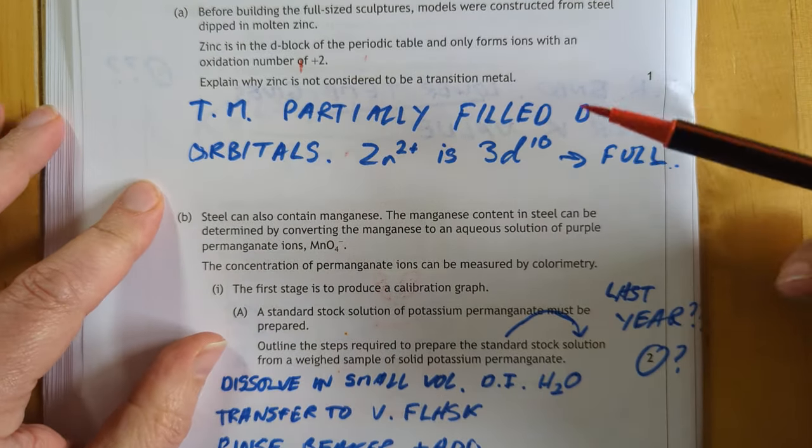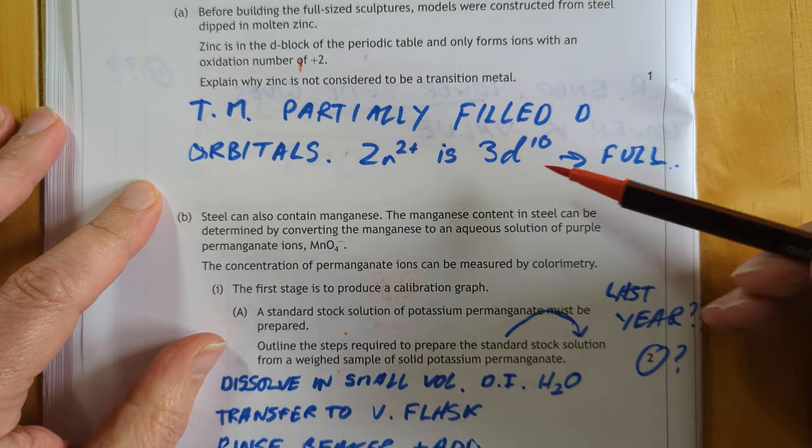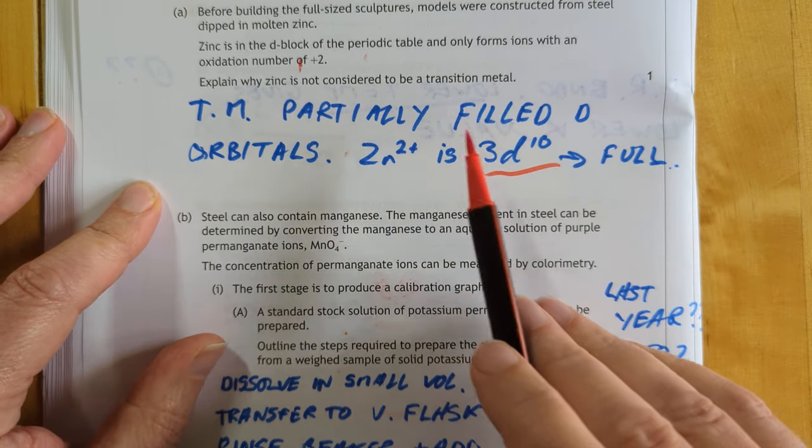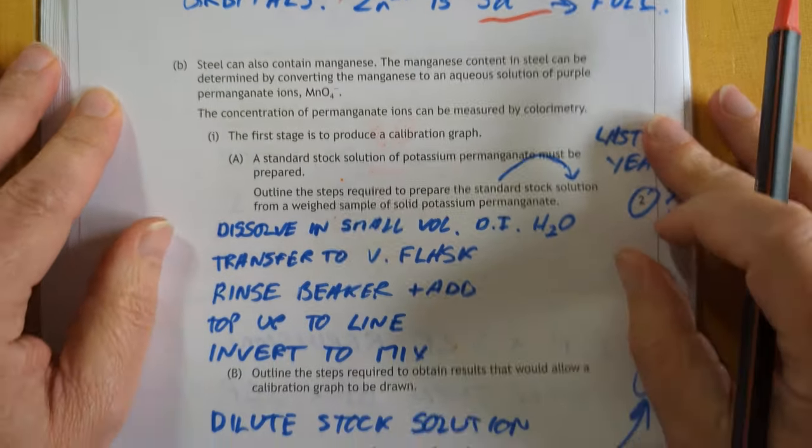Zinc is not considered to be a transition metal because it has got a completely full set of D electrons, as opposed to the definition of a transition metal which is partially filled. That's a pretty obscure one as well. I wonder how many people will get that.